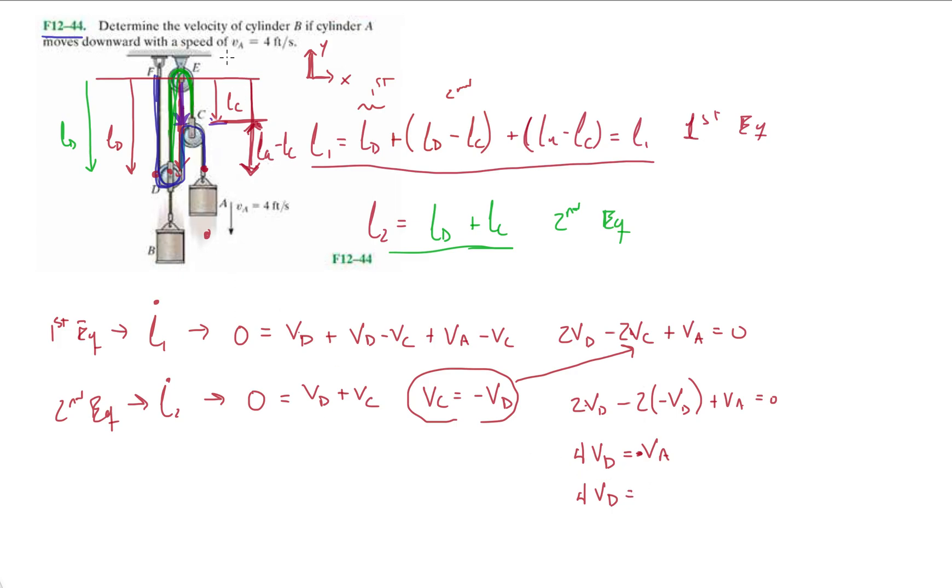And then four vd. Remember, they gave us that va is going down four feet per second. So it's going to be, ends up being minus minus, right? Because we said the positive y is going up, negative y is going down. This results in vd being one feet per second, one foot per second. Okay. And that's it. And that's what they wanted.